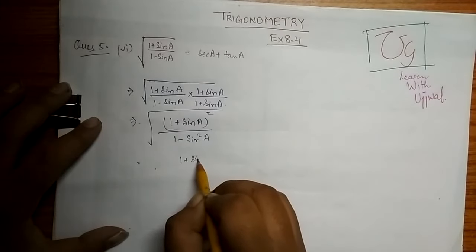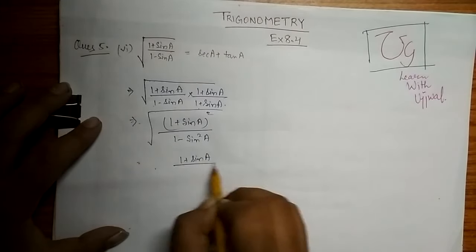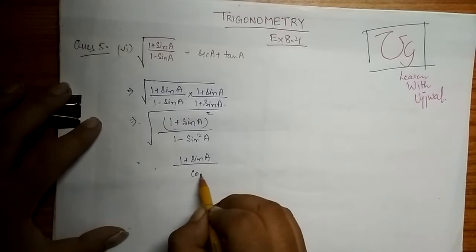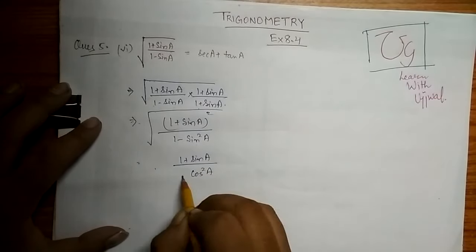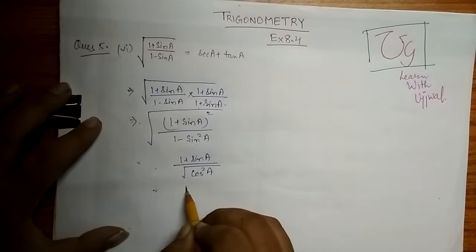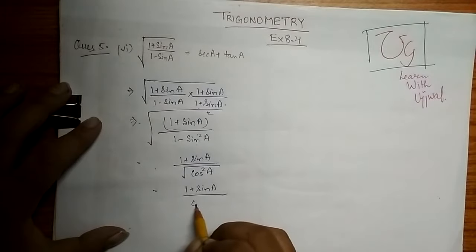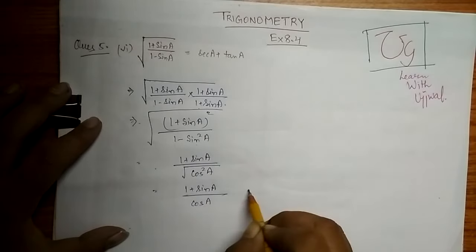So (1 + sin a), and since 1 minus sin square a is nothing but cos square a, and we have under root of this, so it will become (1 + sin a) upon cos a. If we write them separately...